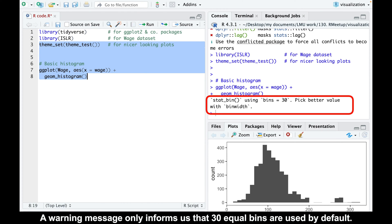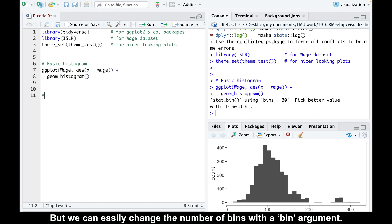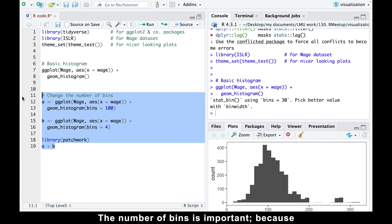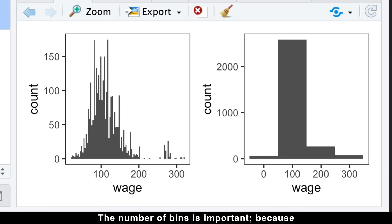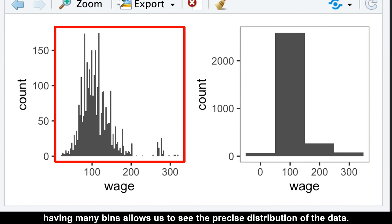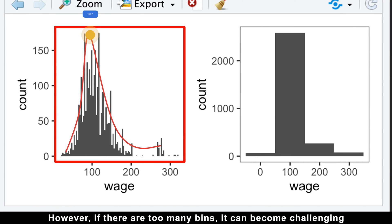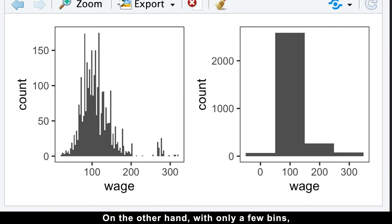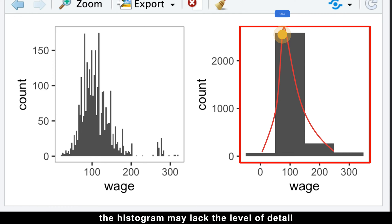A warning message only informs us that 30 equal bins are used by default, but we can easily change the number of bins with a bin argument. The number of bins is important because having many bins allows us to see the precise distribution of the data. However, if there are too many bins, it can become challenging to distinguish the signal from the noise. On the other hand, with only a few bins, the histogram may lack the level of detail needed to discern any useful pattern or trend in the data.